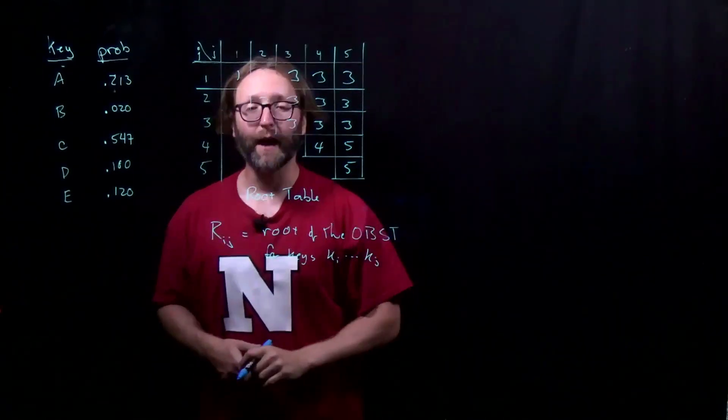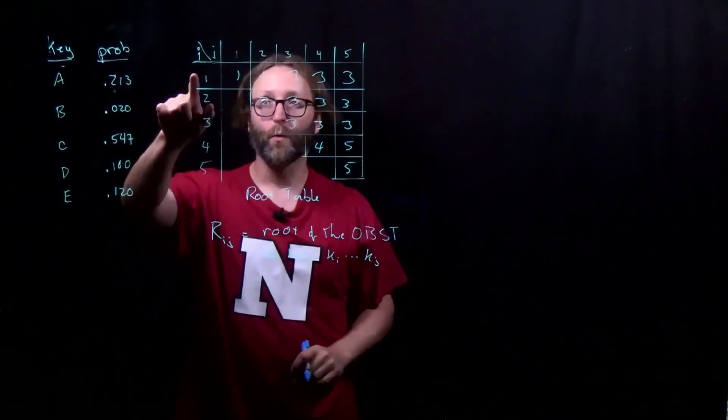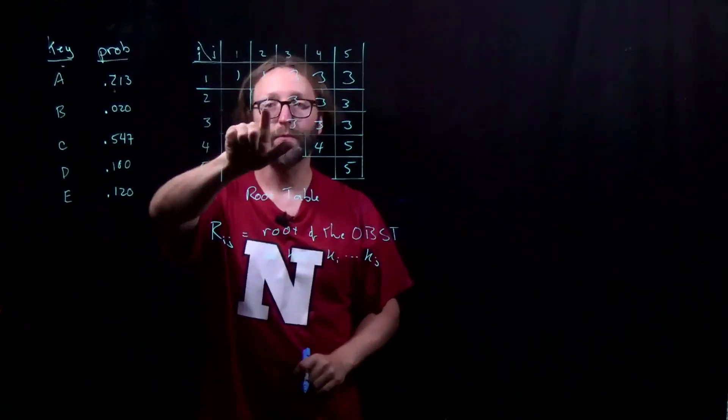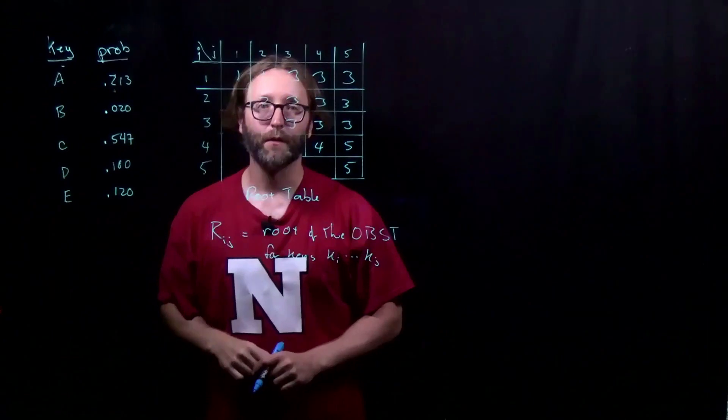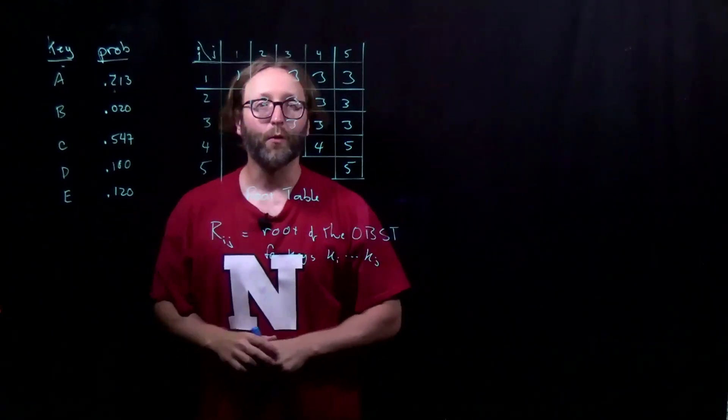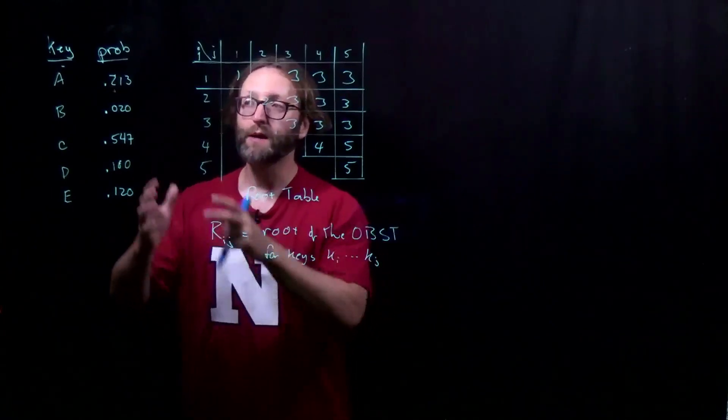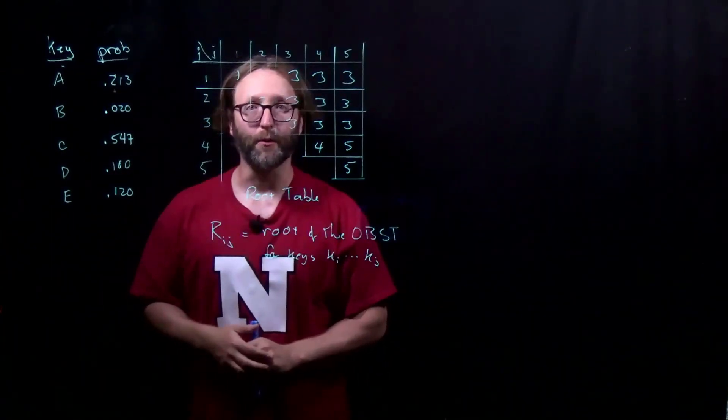Along the diagonal we only have single node trees. Keys 1 through 1, of course it's going to be 1. 2 through 2, it's going to be 2, etc. Each one of these values corresponded to the l that gave us the minimum cost. We now need to construct this tree given this root table.